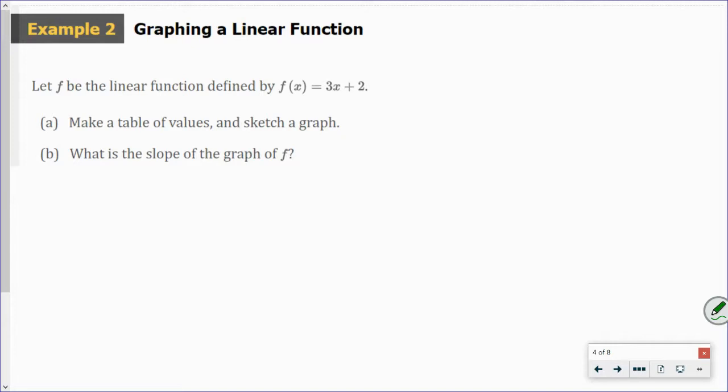Okay, let f be the linear function defined by this. Make a table of values and sketch the graph. Okay, so they want us to make a table of values. So we're just going to pick some x values here. It doesn't matter what x values you pick. So we're just going to pick negative 2, negative 1, 0, 1, and 2. Those are numbers I try to pick all the time, even with other functions as well. So when I take this and plug it in, I get 3 times negative 2 plus 2, which is minus 4. I get 3 times negative 1 plus 2, which is negative 1. I get 0 times 3 plus 2, which is 2. I get 3 times 1 plus 2, which is 5. And I get 3 times 2 plus 2, which is 8.